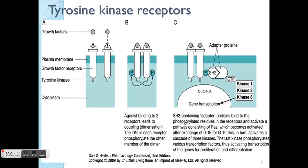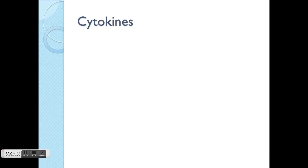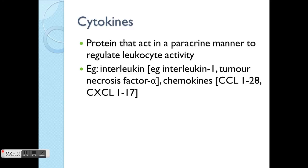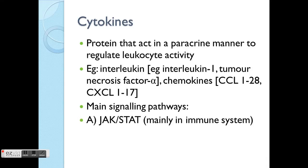Here is another diagram to summarize how tyrosine kinase receptors act. Now we look at the other type of receptor: cytokine receptors. Cytokine receptors react in a paracrine manner — basically secreted and self-activated on the same cells. There are a few main ones: interleukins and chemokines, which you'll learn more about in the immunology class.